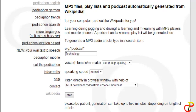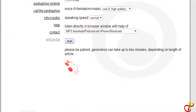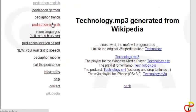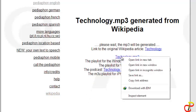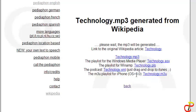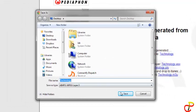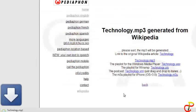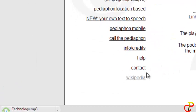Now when you click on start, you have to wait for about two minutes. Please be patient. Now that it is done, when you come here, you find the name of the article. The extension of that is 'technology.mp3'. Whatever the name is, it will come as .mp3. Now if you are using IE, you can download it directly. Click on save. Now it will start to download.